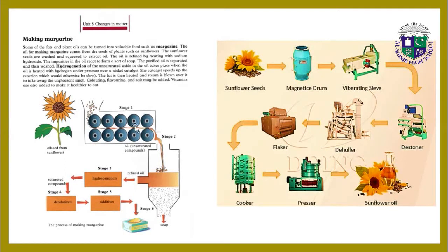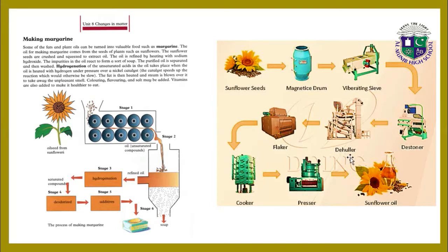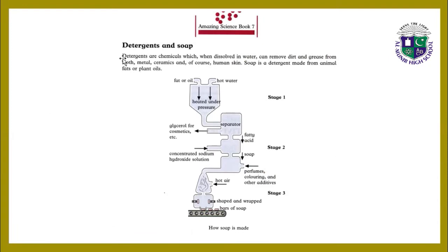Here is the whole picture of the process of how margarine is made. The stages include: oil seeds from sunflowers — stage one through stage five — involving magnetized drum, vibrating sieve, stone removal, flacker, cooker, and pressure to produce sunflower oil. Detergents and soaps: detergents are chemicals which, when dissolved in water, can remove dirt and grease from cloth, metals, ceramics, and human skin. Soap is a detergent made from animal fats or plant oils.